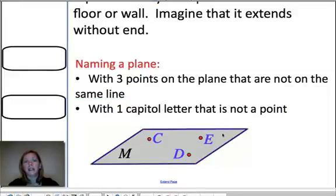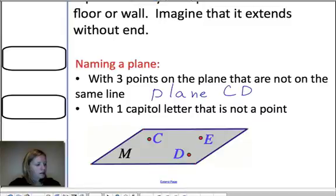So if you look at this example of this flat surface here, we can see points C, D, and E are all on the plane. So I could name this plane, plane C, D, E. I could also name it plane D, C, E. Again, the order of the points doesn't really matter.